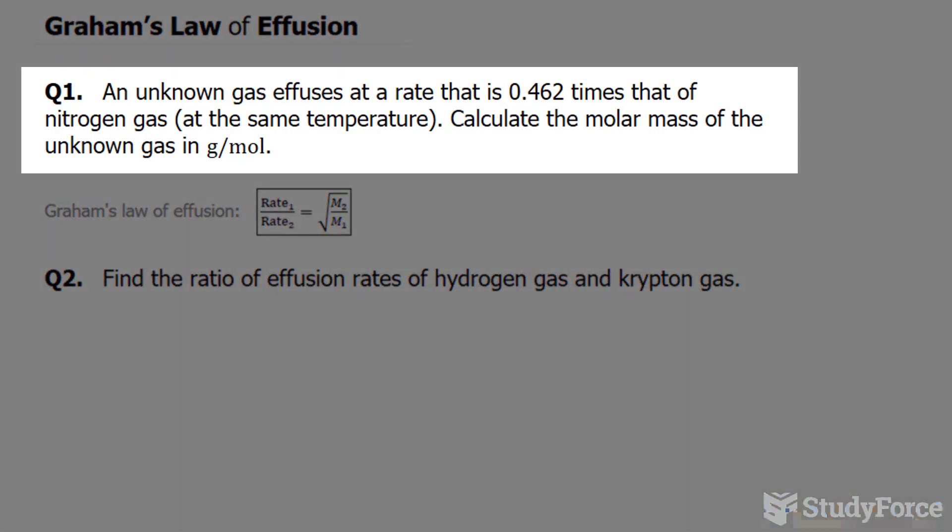Question 1 reads: an unknown gas effuses at a rate that is 0.462 times that of nitrogen gas at the same temperature. Calculate the molar mass of the unknown gas in grams per mole.